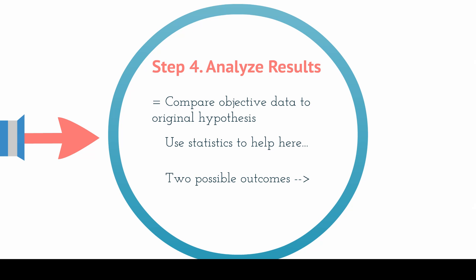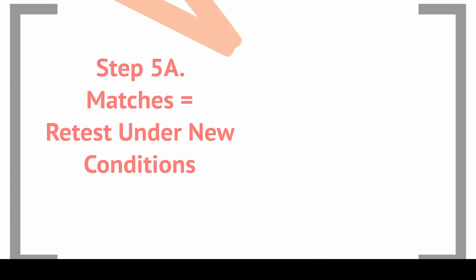There are two possible outcomes when you analyze your data compared to your hypothesis. You could match your hypothesis, and that doesn't mean you're done with the scientific method — it just means that you need to retest under new conditions. You found out an answer that seems to be right for one particular situation, and now you need to try it under new ones.